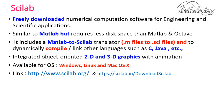Scilab is a freely downloadable numerical computation software for engineering and scientific applications. It is similar to MATLAB but requires less disk space than MATLAB and Octave. Scilab includes a MATLAB-to-Scilab translator — .m files generated in MATLAB can be translated to .scilab files. Scilab also dynamically compiles or links other languages such as C, Java, etc. It supports integrated object-oriented 2D and 3D graphics with animation, and is available on Windows, Linux, and macOS.